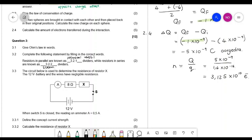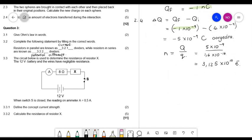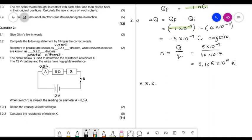Then I give you the circuit below and I say if S2 is closed, then the reading on the ammeter is 0.5 ampere. Then they ask for another definition of current. You can go look at that again. And then for 3.3.2, they ask you to calculate the resistance of X.